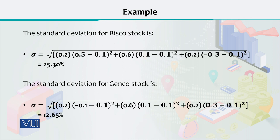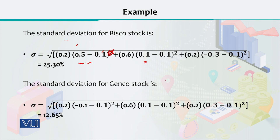The formula requires the value of the mean and the returns, along with the corresponding probability. For RISCO, the mean we have calculated is 0.1. You have the returns in strong, normal, and weak conditions. You subtract the mean from each return and square the result — as you can see we have squared it here. Then you multiply by the corresponding probability. You have three values across three states, and you work with all three. Then when you add these three together, you take the square root to get the standard deviation value.